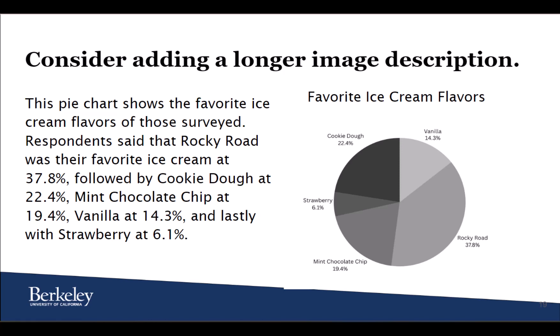This description reads: This pie chart shows the favorite ice cream flavors of those surveyed. Respondents said that Rocky Road was their favorite ice cream at 37.8%, followed by cookie dough at 22.4%, mint chocolate chip at 19.4%, vanilla at 14.3%, and lastly strawberry at 6.1%. This description lets us know all of the critical information in the pie chart.